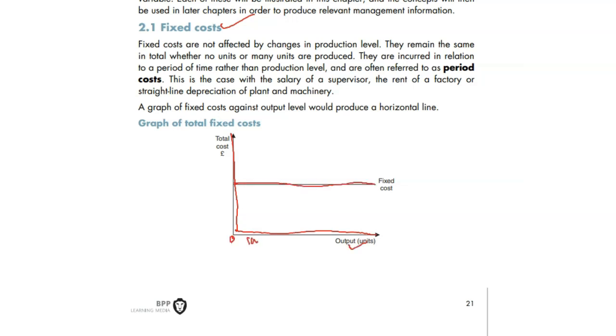This is your output level. Let's say you're starting from zero, 100, 200, 300, 400, 500. Let's say the rent of your warehouse - the rent per month is 200 pounds. Whether you produce zero units or 500 units, the rent is still 200 pounds. That's your fixed cost.